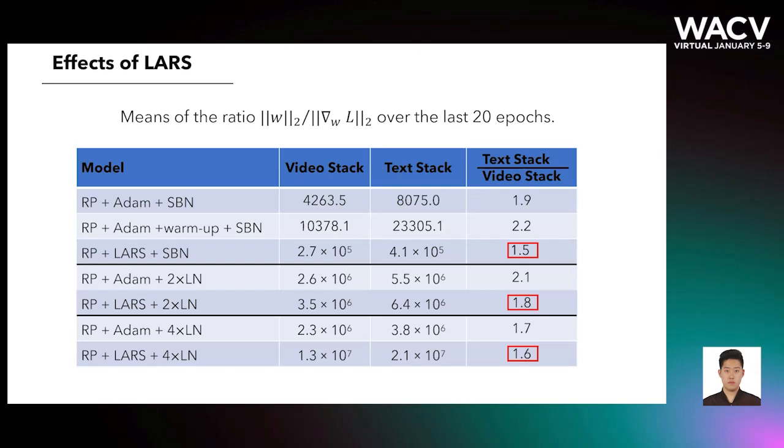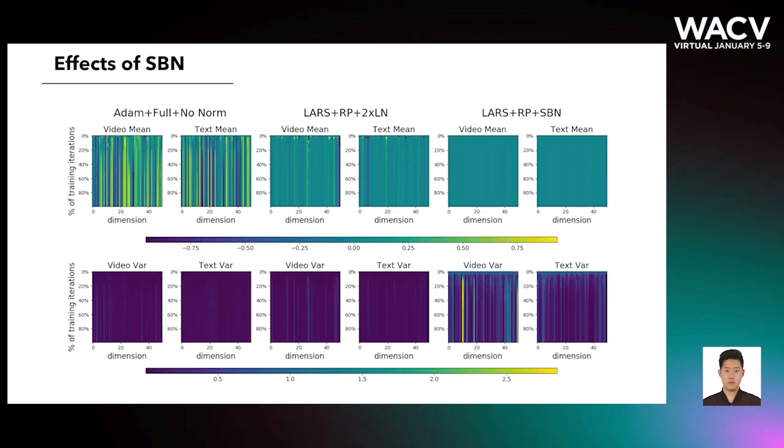This table lists the ratio between the norm of the width and the gradients. The higher the ratio is, the better the model is optimized. The ratio of LARS is always larger than Adam. LARS always reduces the relative gap between the ratios of the text stack and video stack. These two facts suggest that the optimization of the two modalities is better aligned with LARS than without.